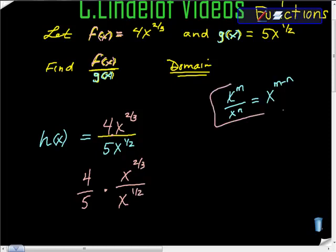Well, if you look at this model, this tells us what to do. So we need to do 2 3rds minus 1 half.